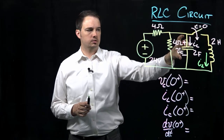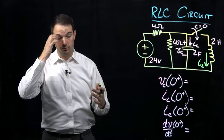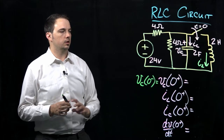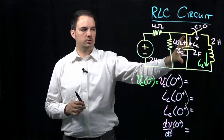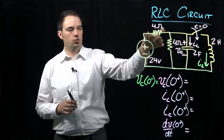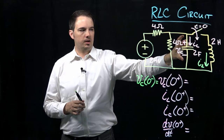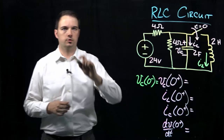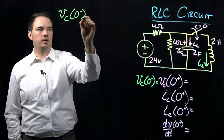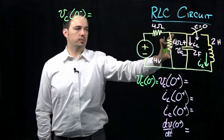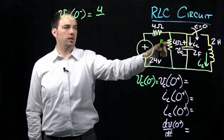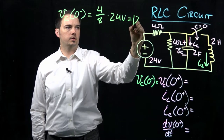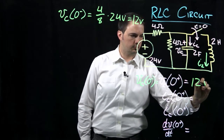For the voltage across the capacitor at time zero plus — we know that Vc(0+) must equal Vc(0−) since those are equivalent quantities. Before closing the switch, we have the capacitor in parallel with a four-ohm resistor, another four-ohm resistor, and the 24-volt supply. At steady state the capacitor acts as an open circuit, so applying the voltage divider gives us 4 over 8 times 24 volts, which equals 12 volts.